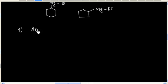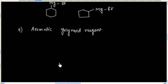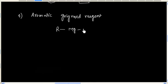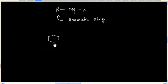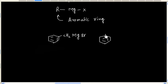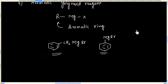And finally, we can have the aromatic Grignard reagent. This time, R contains an aromatic ring. For example, it can have a benzene ring. So, this is an aromatic Grignard reagent.